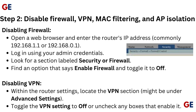Step 2: Disable firewall, VPN, MAC filtering, and AP isolation. To disable the firewall, open a web browser and enter the router's IP address — commonly 192.168.1.1 or 192.168.0.1. Log in using your admin credentials. Look for a section labeled Security or Firewall, find the Enable Firewall option, and toggle it to off.